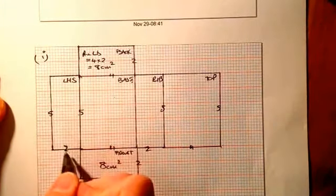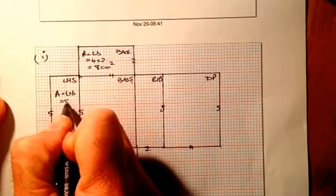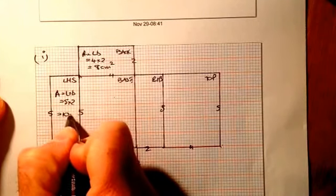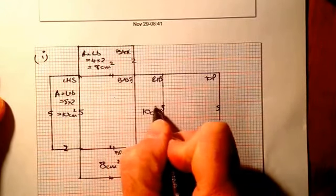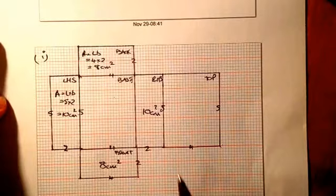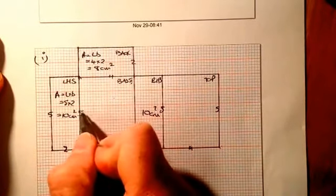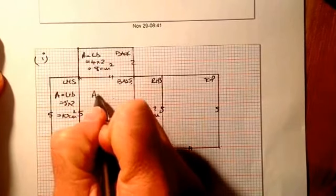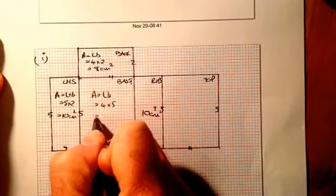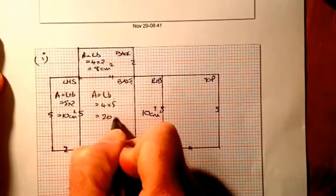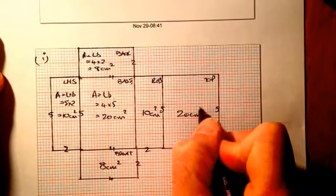Left-hand side: five times two — area equals length times breadth — five times two gives me ten centimetres squared. This one here also must be ten centimetres squared. The base and top — we'll go for that next: that's four times five. Area equals four times five, which gives me twenty centimetres squared. This one here is also twenty centimetres squared.